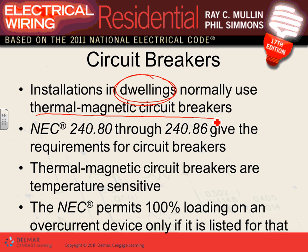Thermomagnetic is the cheapest and easiest. It has a thermal component that heats up and opens — that's overload; and a magnetic component with a coil that sees a huge amount of current and trips for short circuit. That's the most common in dwellings.